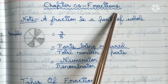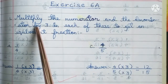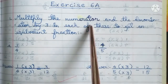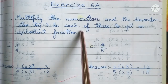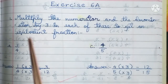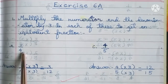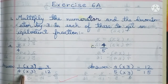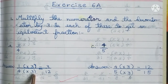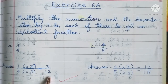Chapter 6: Fractions, Exercise 6a. Multiply the numerator and the denominator by 3 in each of these to get an equivalent fraction. First one: 1 by 4. Answer: 1 by 4 is multiplied with 3 on both top and bottom, we get 3 by 12.